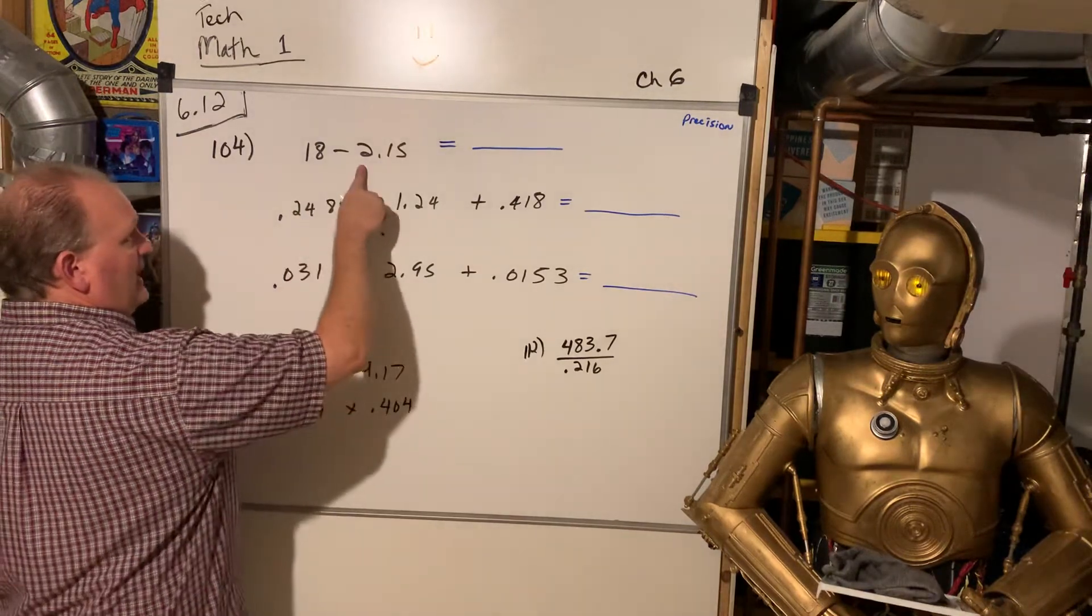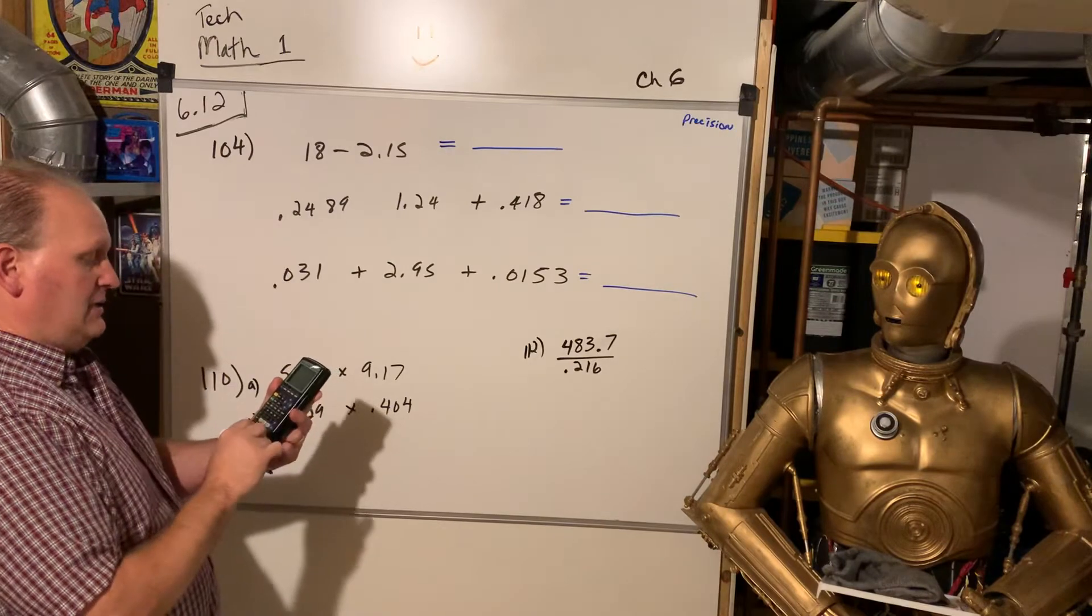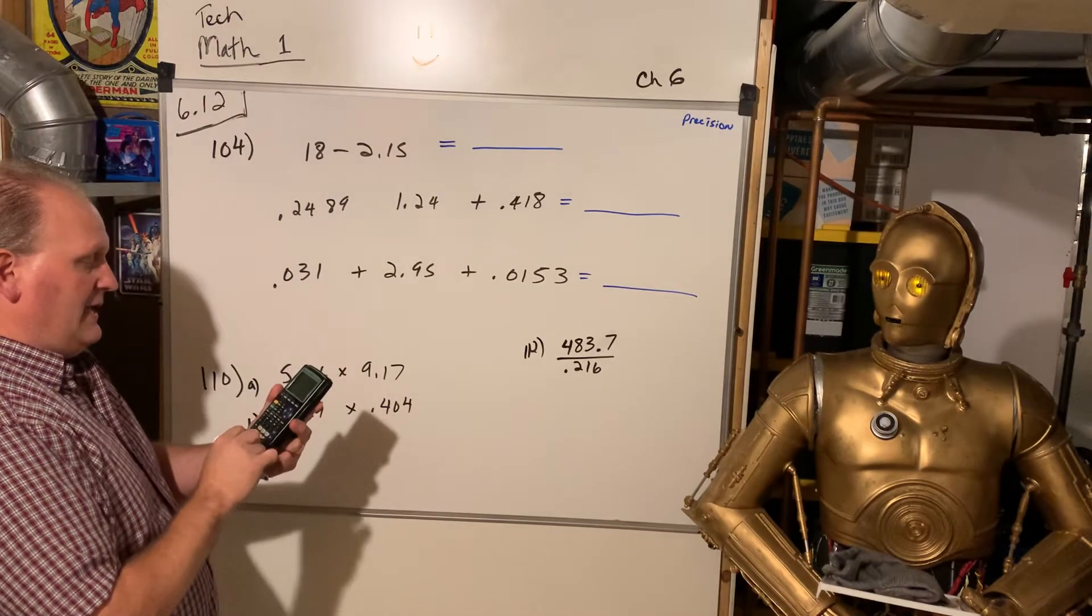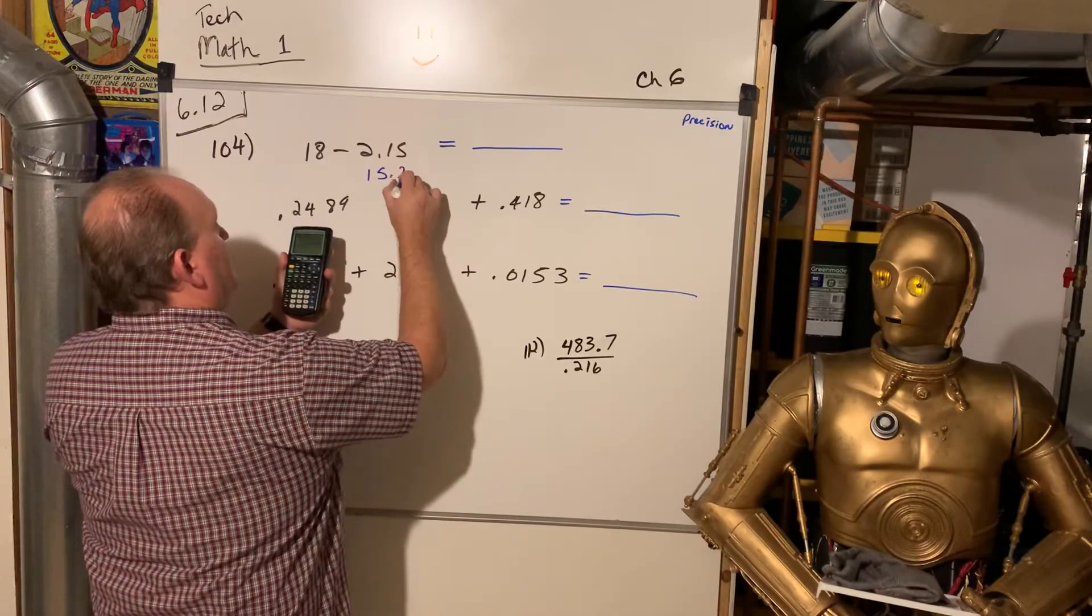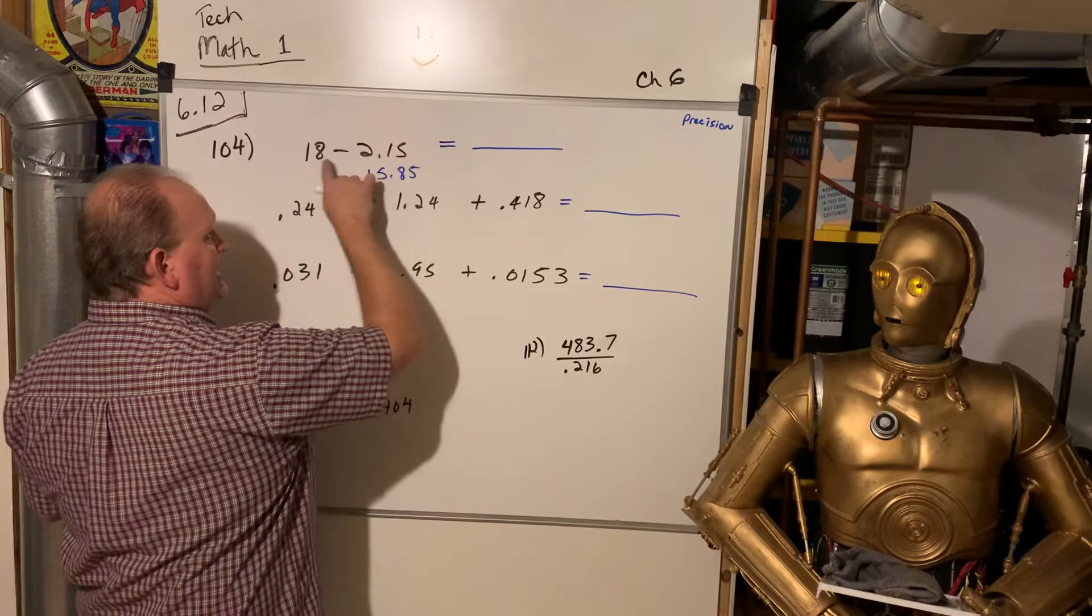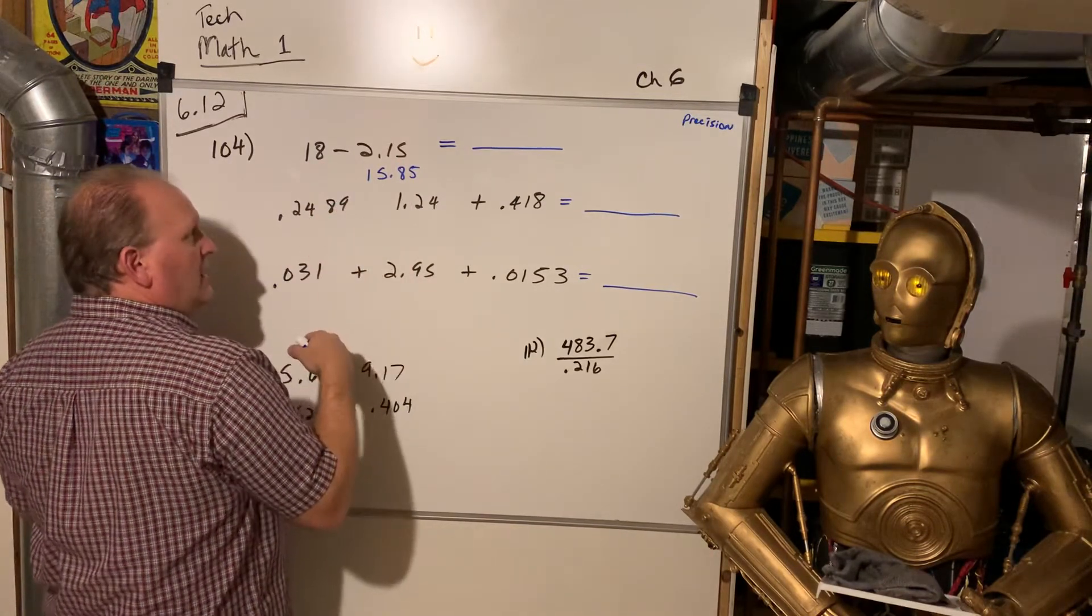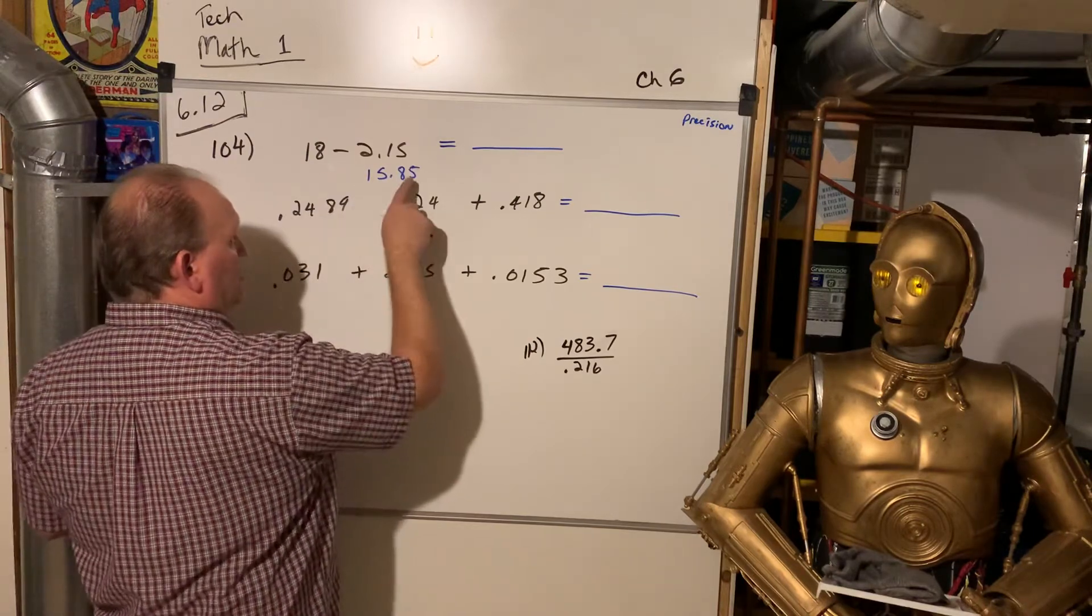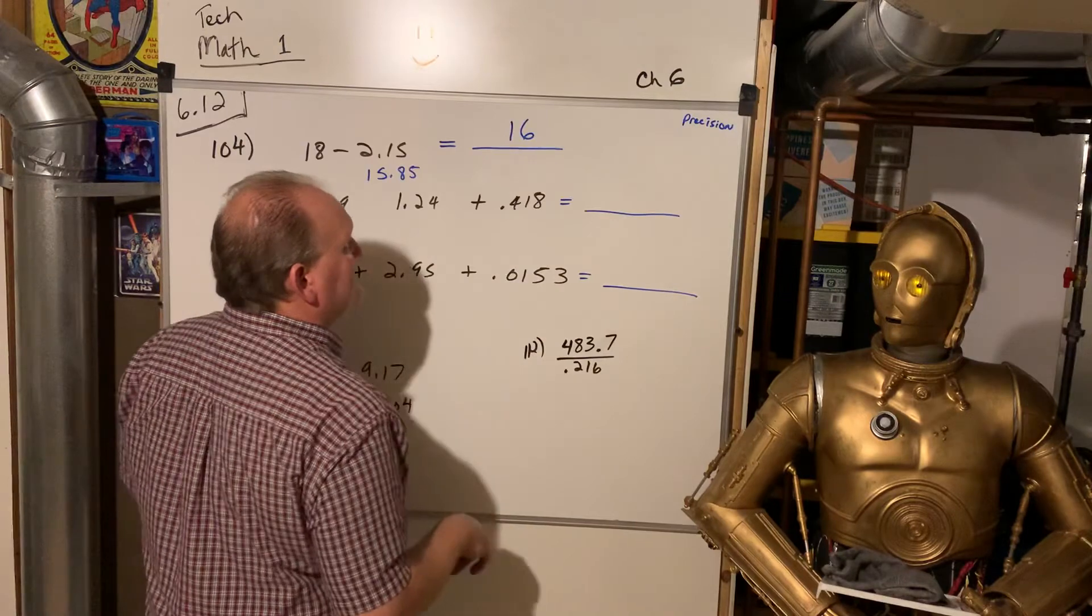Which means I look at the decimal point and you take the less precise one. So look, if it's 18 minus 2.15, let's do that, 18 minus 2.15, that gives me this, 15.85. But this goes 10ths hundredths place, and this is just going to the nearest whole number. And so I would want to report this as the nearest whole number. So I'd actually report it out as 16.